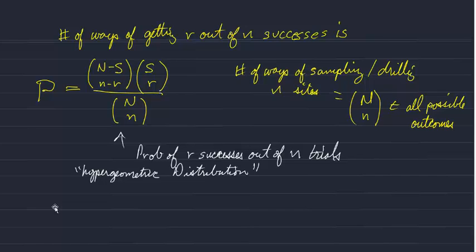The second way was the situation where the population is limited. In that case, the probability of each success changes as you sample the population.